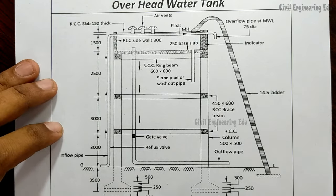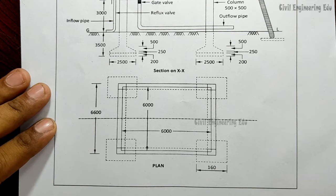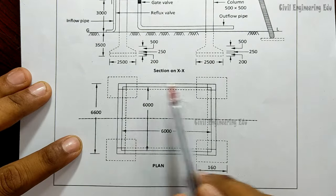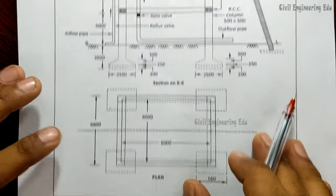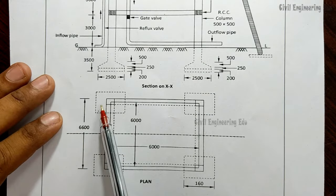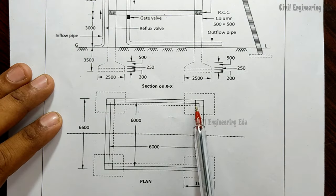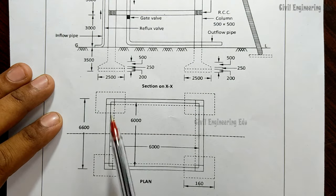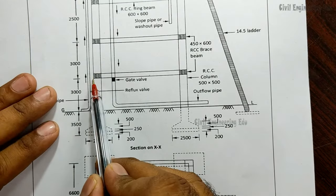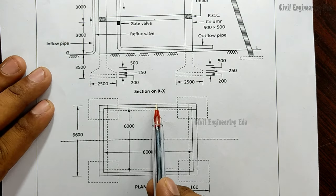Let's try to understand the drawing first. This is the section and this is the plan of an overhead water tank. In the plan, all four corners are arranged with columns and footings. There are four footings total, one under each column. The outer-to-outer dimension from end to end is 6.6 meters, and since this is a square-shaped figure, the other side is also 6.6 meters.